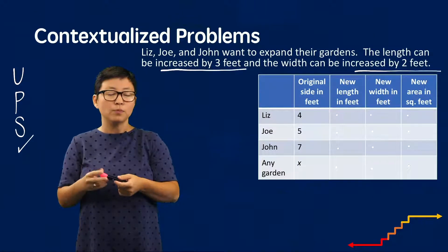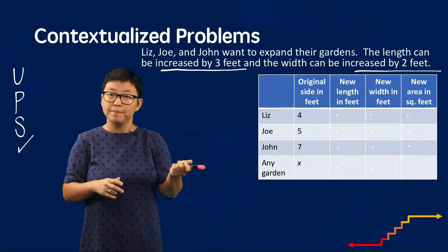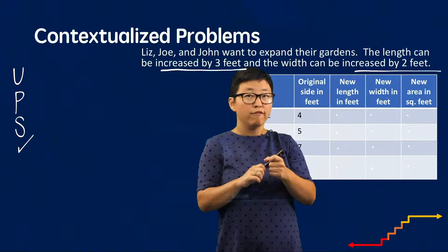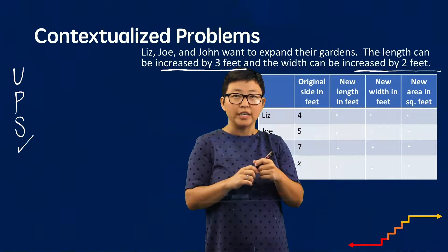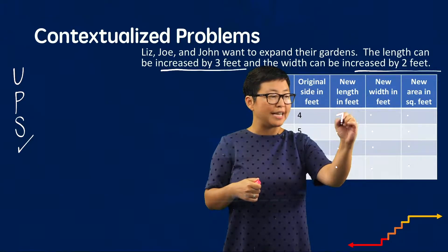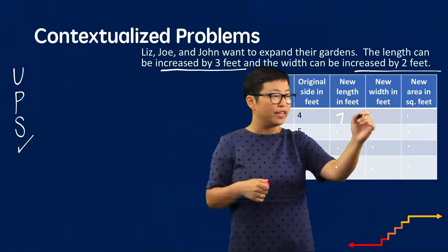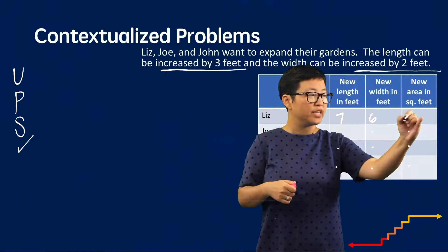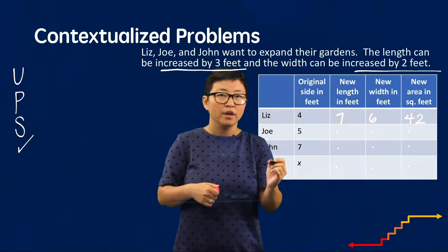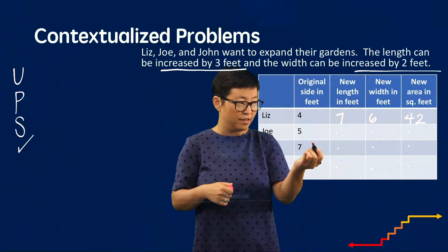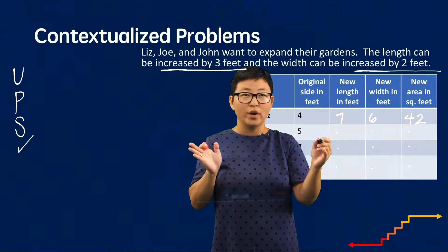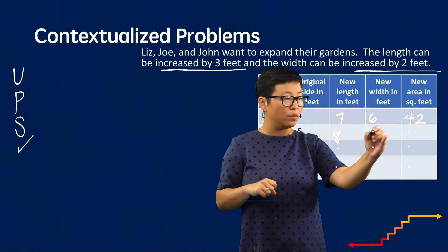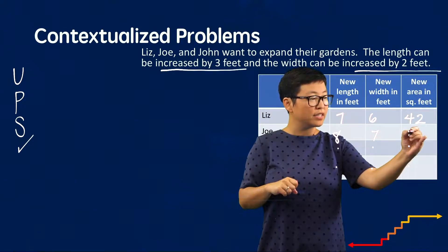Next, I'm going to make a plan, which has two parts. First, I'll fill out the table. Liz's garden has an original side of 4 feet; her new length is 4 plus 3 = 7 feet, new width is 4 plus 2 = 6 feet, and new area is 42 square feet. For Joe, the original side is 5 feet; new length is 8 feet, new width is 7 feet, and new area is 56 square feet. For John, the original side is 7 feet; new length is 10 feet, new width is 9 feet, and new area is 90 square feet.